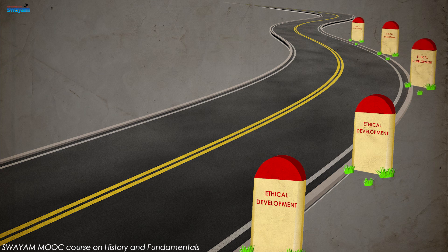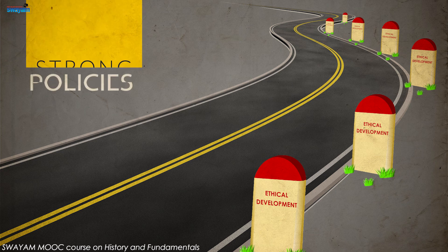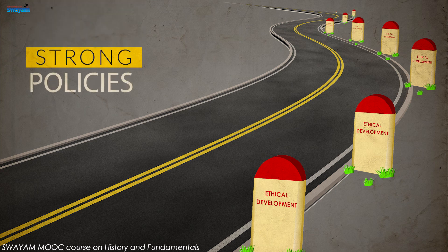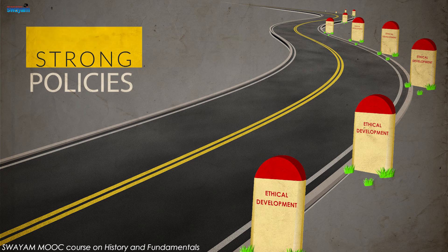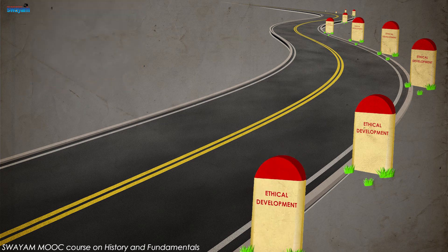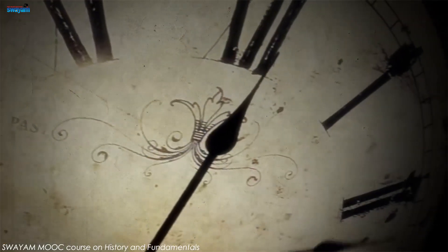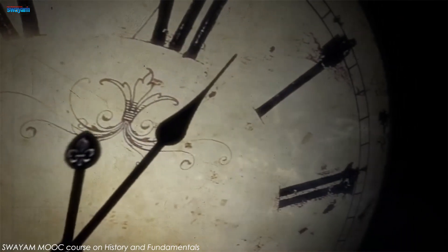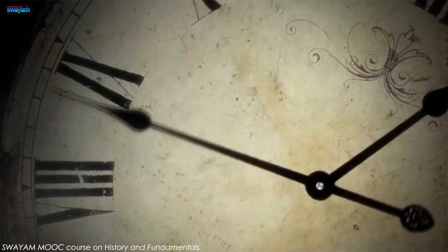There were a couple of events which happened in history which led to strong implementation of policies to ensure ethics in clinical research while conducting studies. As mentioned, the ethical guidelines were the outcome of many historical events of abuse and resulted in the need for regulatory practice, which evolved over a period of time.